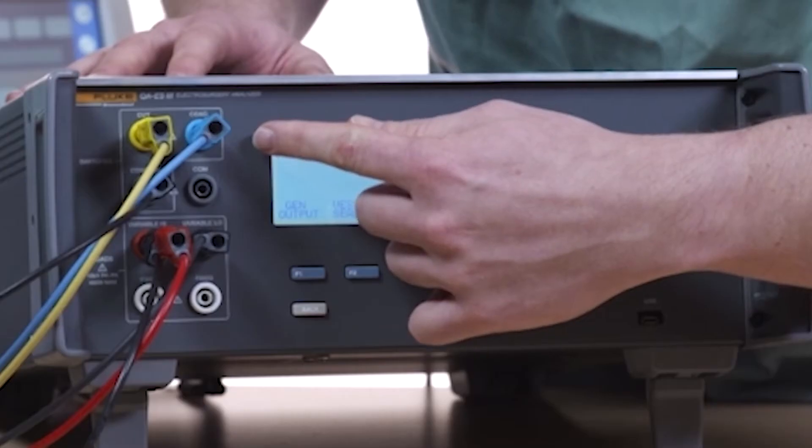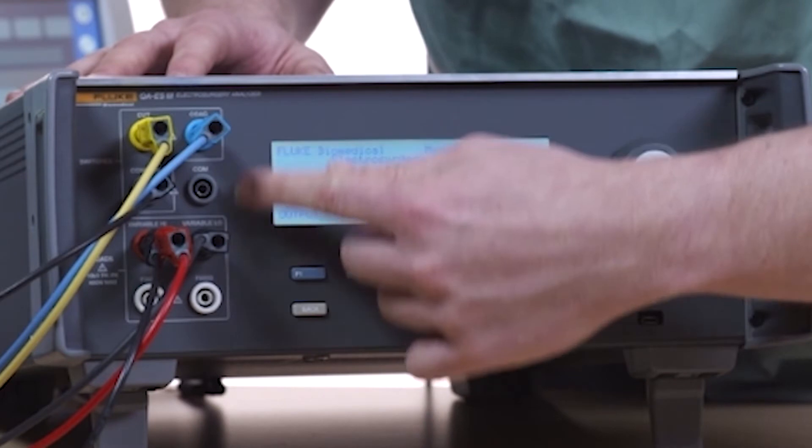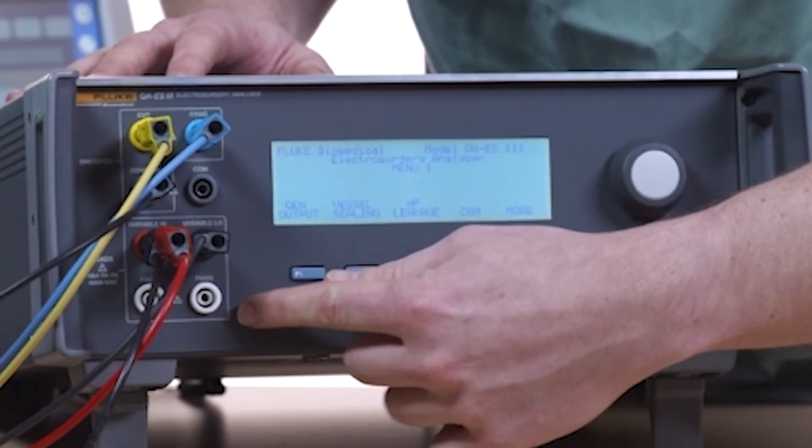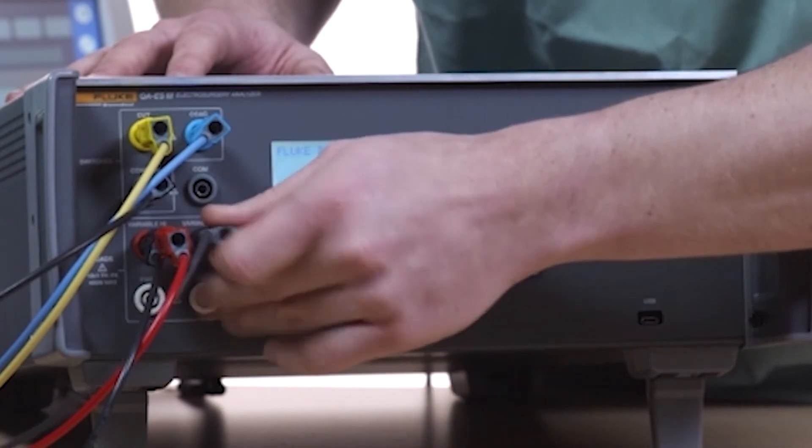Use the same setup as a generator output or power distribution test, except disconnect the variable low jack from the shorting leads.